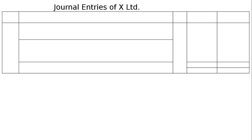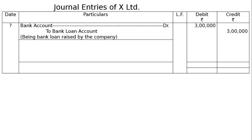Journal entries of AX Limited. We have to draw the journal format. First, we take the loan — write down the general entry for taking a loan from IDY Bank worth Rs.3 lakh. This is bank account debited to bank loan account: Rs.3 lakhs in both debit and credit columns.